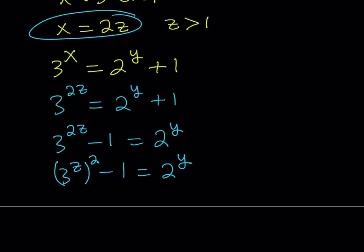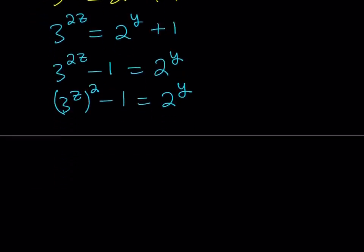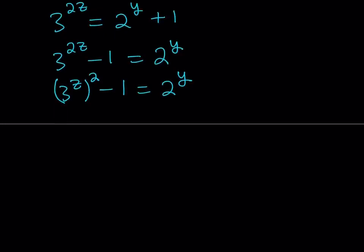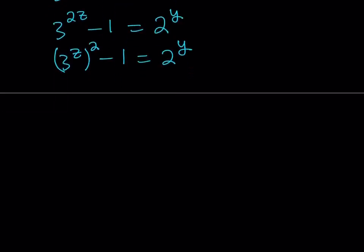Now, the good thing about getting a perfect square is super important because now you can factor it. And factoring definitely plays an important role in solving Diophantine equations. So I can basically write this as (3^z + 1) multiplied by (3^z - 1), and that equals a power of 2.